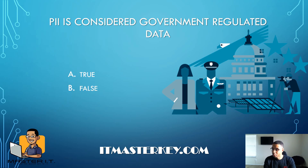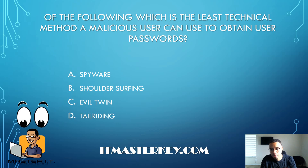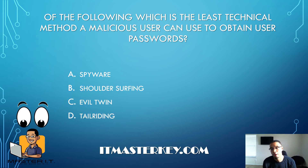PII, which stands for Personally Identifiable Information, is considered government-regulated data — true or false? That is true. Of the following, which is the least technical method a malicious user can use to obtain user passwords? Shoulder surfing — which literally means they look over your shoulder and try to figure out what your password is as you type it in.